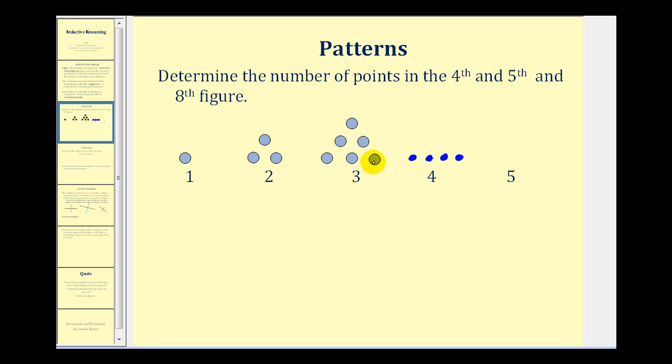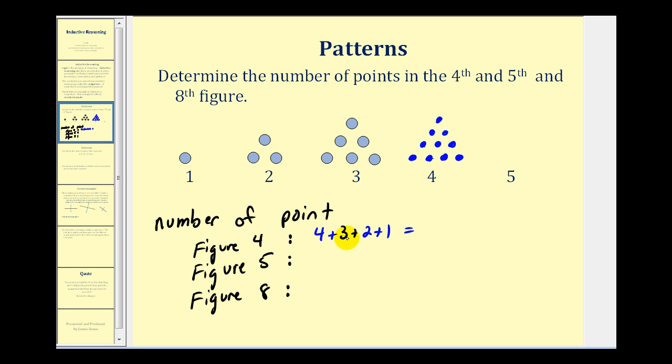The number of points will decrease by one until we reach the top of the triangle. So we'll have four, three, two, and one by following the given pattern. So the number of points in the fourth figure would be four plus three plus two plus one. This would give us ten points.